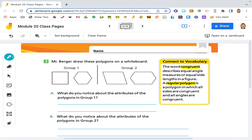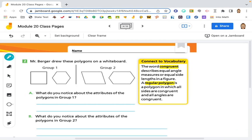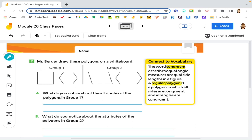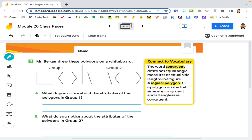So Mr. Brewer drew these polygons on the whiteboard. Well first let's connect to the vocabulary. The word congruent describes equal angle measures or equal side lengths in the figure. A regular polygon is a polygon in which all sides are congruent and all angles are congruent.